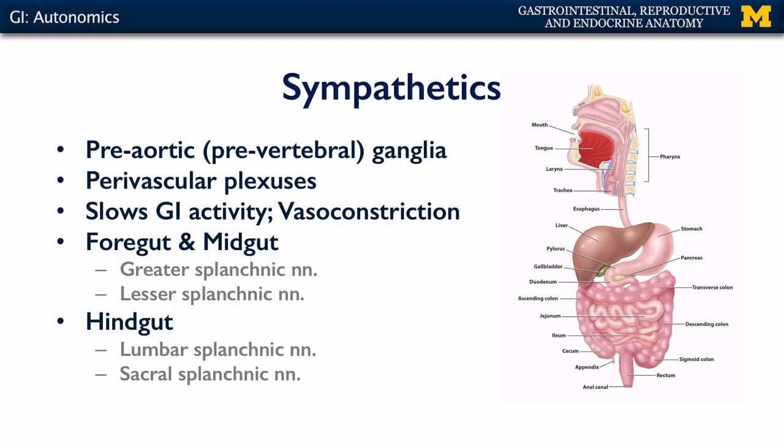The sympathetics work counter to the parasympathetics, so they slow GI activity. Their largest importance is through vasoconstriction — during a flee or fight response, we vasoconstrict blood flow to the gut tube so that blood may be more readily available for skeletal muscles. In terms of overall distribution, the fore- and mid-gut are served by the greater and lesser splanchnic nerves and branches of the abdominal sympathetic trunk, whereas the hindgut is served via lumbar splanchnic nerves and sacral splanchnic nerves.